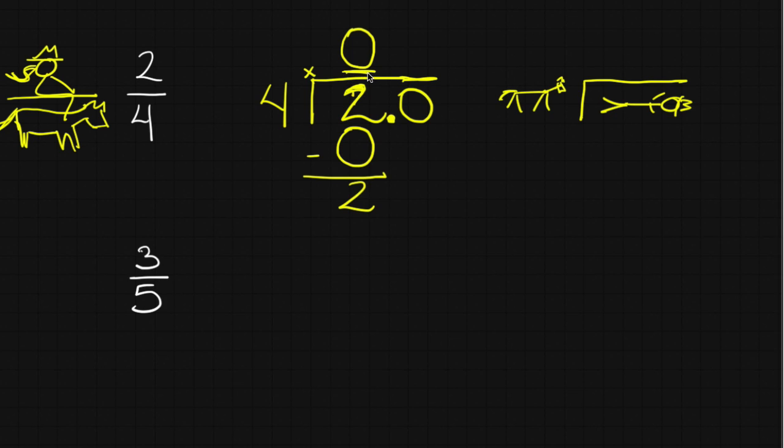Now, if this is the ones place in my answer, this has to be the tenths place in my answer. So what we say is just pop this decimal straight up. It keeps the ones place separate from the tenths place. And heck, pop it straight down. This is the ones place. This is the tenths place. I just bring that zero all the way down.